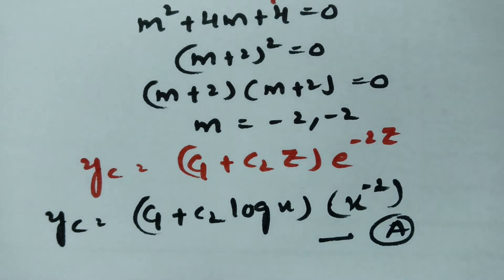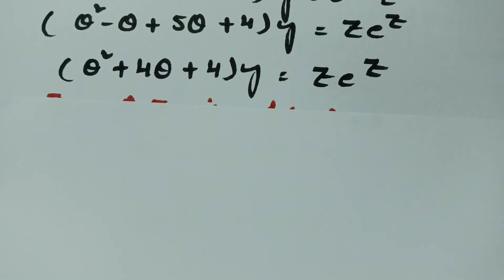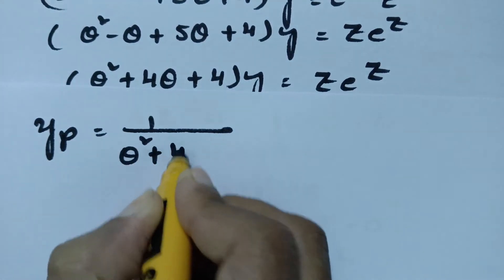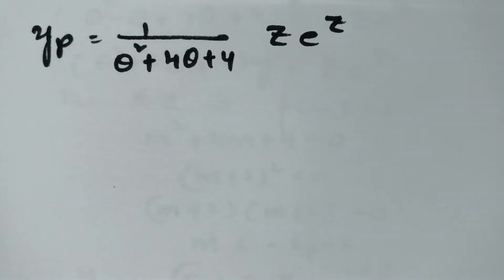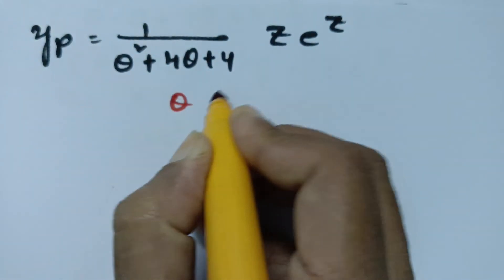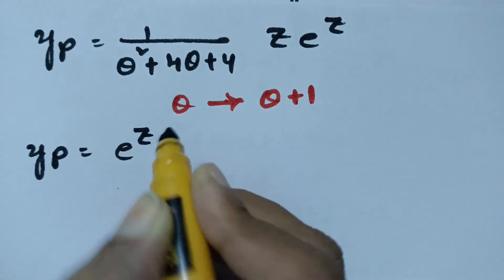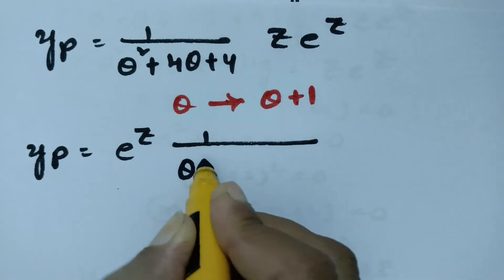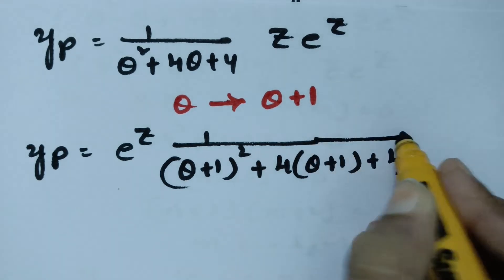Now find the particular integral. yp equals 1 over (theta squared plus 4 theta plus 4) times z times e to the power z. To solve this, replace theta by theta plus 1 — this is the fourth method. Keeping e to the power z aside, substitute theta plus 1 in place of theta: (theta plus 1) squared plus 4(theta plus 1) plus 4, all times z.